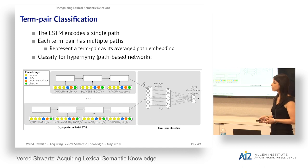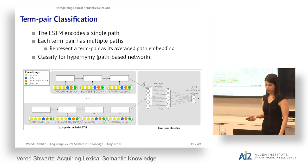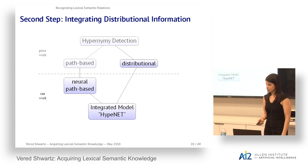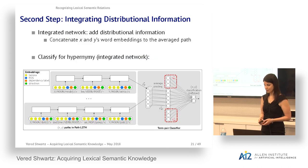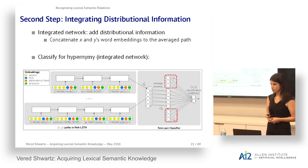Since word pairs usually appear in more than one dependency path, we encode each path separately with the LSTM and represent the word pair by averaging over all path embeddings weighted by their frequency. In the first variant of the network, we classify word pairs based only on path-based information: the average path embedding is the feature vector, fed to an MLP for binary hypernymy classification. In the second step, we concatenate x and y's word embeddings to the average path embedding for the integrated model.